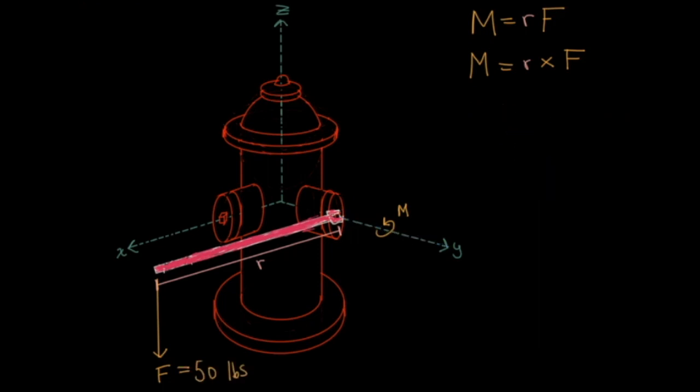So, for this example, let's say we apply a force of 50 pounds to the wrench. We'll write it as negative 50k, because it's a downward force on the z-axis. In coordinates, it would be (0,0,-50). And let's say the wrench is 3 feet long. We'll write it as 3i, because it lies on the positive x-axis. And as coordinates, it would be (3,0,0).